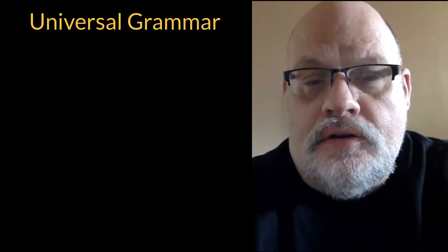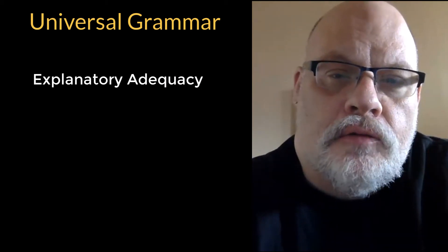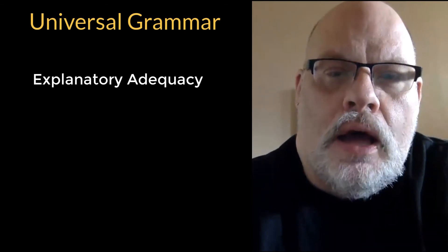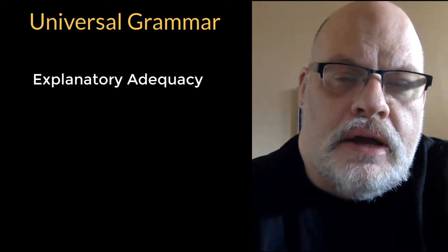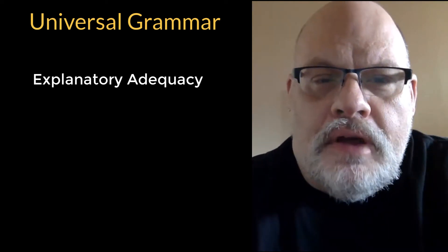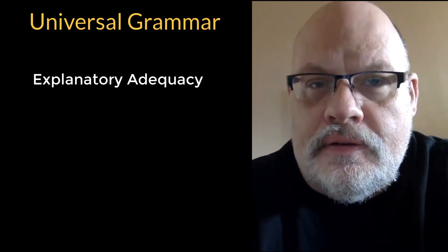We closed the last video with the issue of levels of adequacy in determining whether or not our grammars — our hypotheses — are good or not. The final level of adequacy we talked about was explanatory adequacy, in which we are required to explain real-world data, our judgments, and also to try and get at why language looks the way it is and how we come to know the things that we know. If we're really interested in explanatory adequacy, we're going to have to ask the question: how did we get our syntactic knowledge?